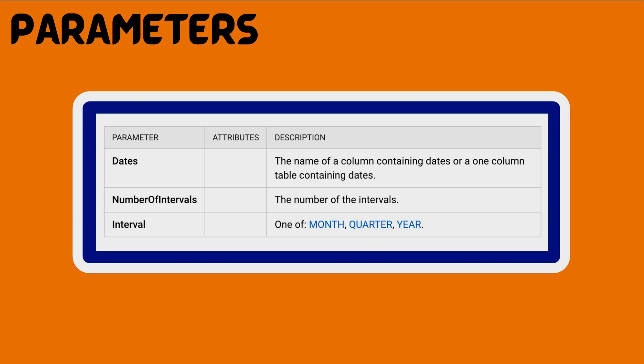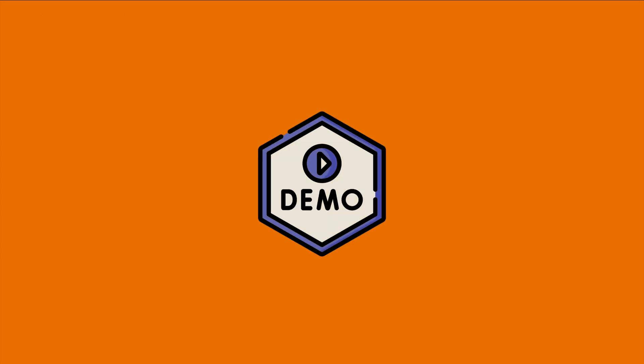The parameters, as I just mentioned: dates — that is going to be the name of the column containing dates, or a one-column table containing dates. Then the number of intervals, like one, plus one, negative one, two, etc. And the interval is going to be one of these: month, quarter, or year. Now let's go to the DAX.do website where we are going to perform a demo.